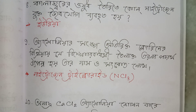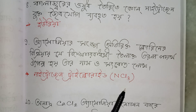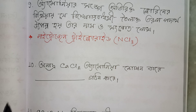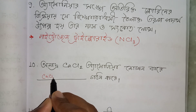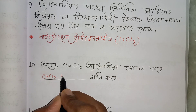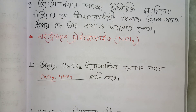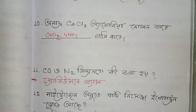Nitrogen — NCl3, and then CaCl2 will be used as CaCl2.4NH3, and then CaCl2.8NH3 will be used as well. Carbon Monoxide is what is called hydrogen gas.